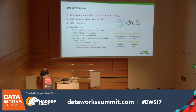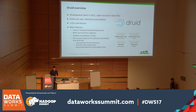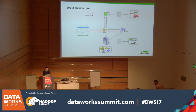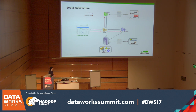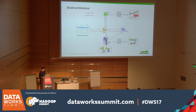They can also use approximate algorithms to obtain results. This is how the Druid architecture looks at the biggest scale. There are three kinds of nodes: broker, real-time, and historical.